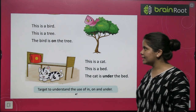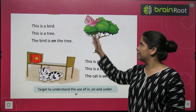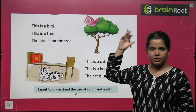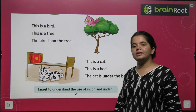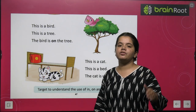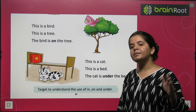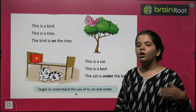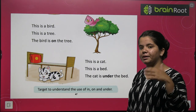This is a bird. This is a tree. This is a bird and a tree. The bird is on the tree. What is on? On means on top of the tree.